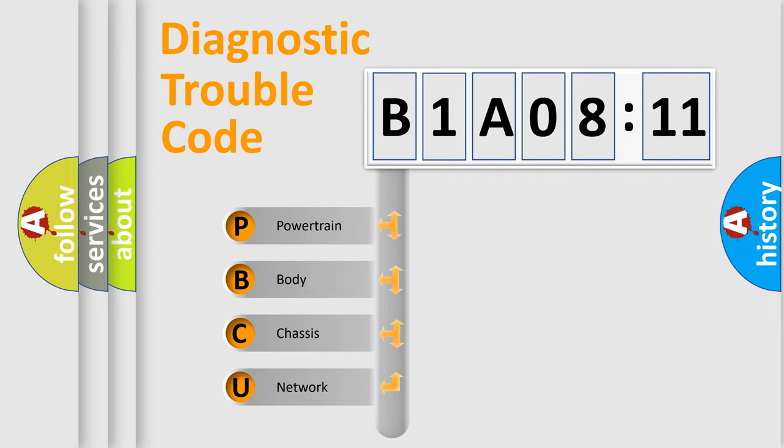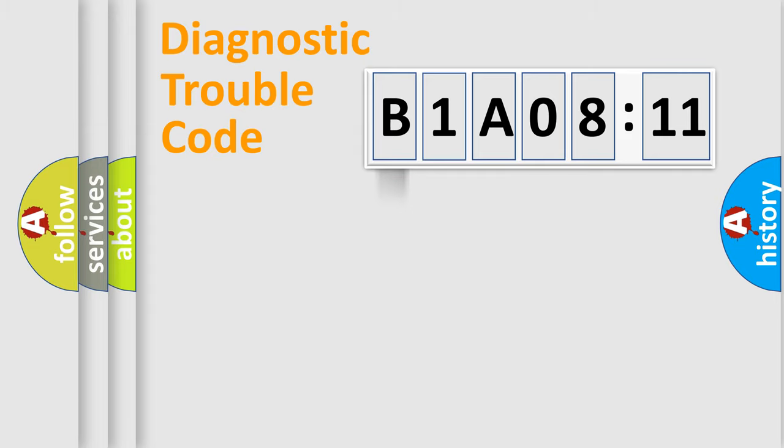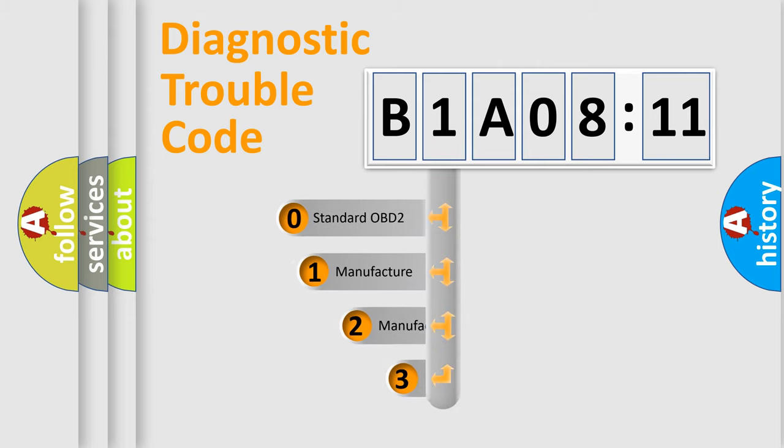We divide the electric system of automobile into four basic units: powertrain, body, chassis, and network. This distribution is defined in the first character code.